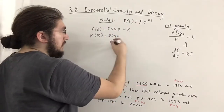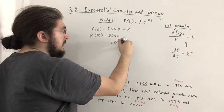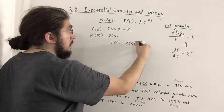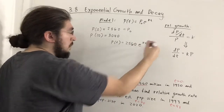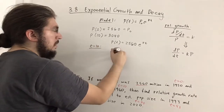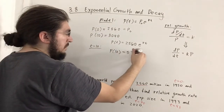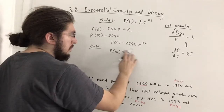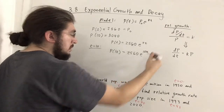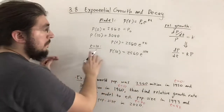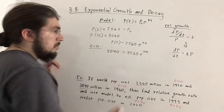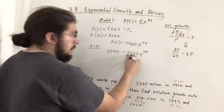If we plug things in, we have P(t) = 2560e^(kt). We want to find k. If we let t = 10, we get P(10) = 2560e^(10k). We can solve for k because P(10) = 3040. So dividing both sides by 2560, then taking ln of both sides to isolate the exponent.